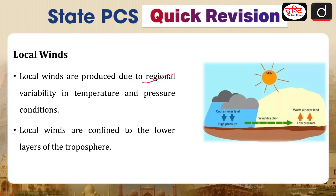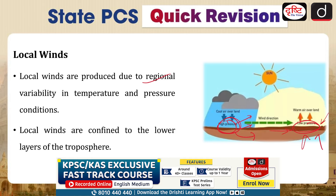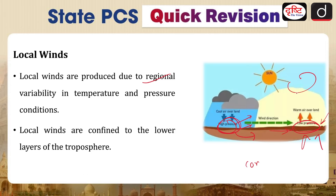Temperature and pressure variations are important because in a high pressure area, winds flow outward — from high pressure to low pressure. In the low pressure area, winds converge and start to ascend, causing convection, cloud formation, and potentially rain. This is how local pressure and temperature variations impact the weather of that particular region.